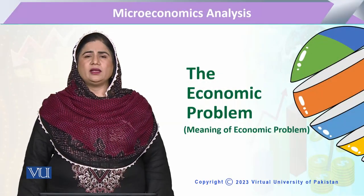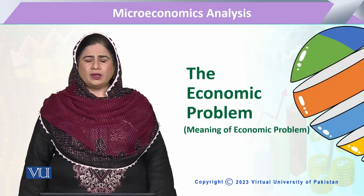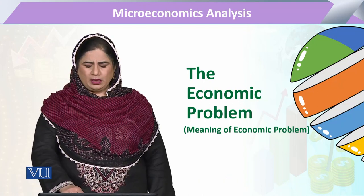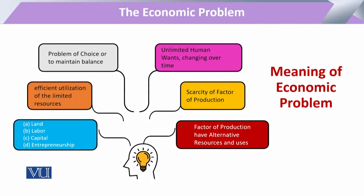We are going to explain the economic problem and what is the meaning of the economic problem. In economics there may be many types of problems, but the actual problem that shapes the form of the economic problem has only the issue of scarcity. So the allocation of resources is the main title that gives all forms of economic problem to the society.